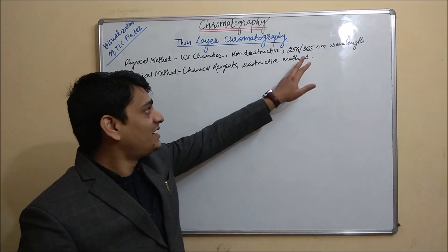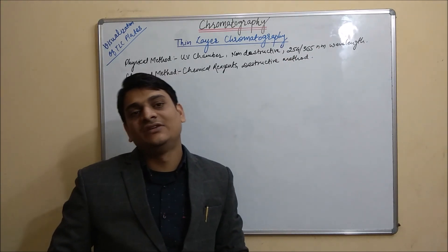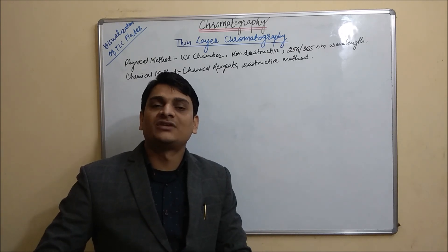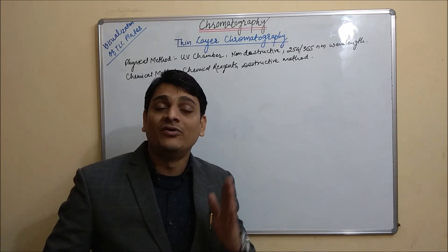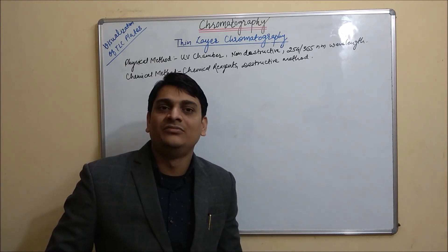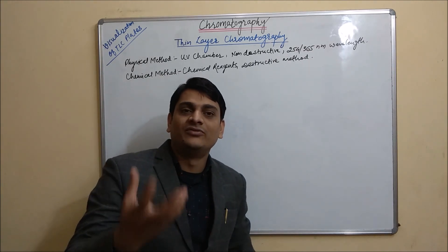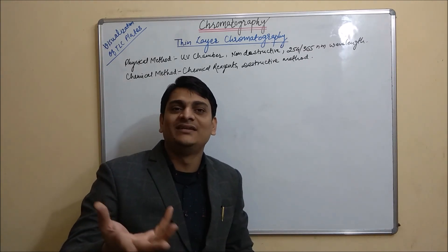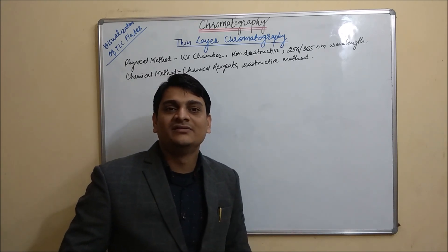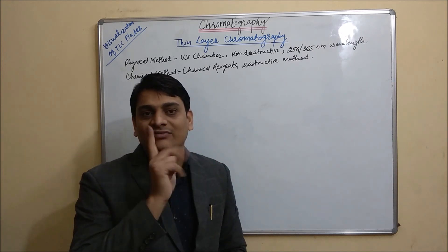The second wavelength is 365nm. Why we are using 365nm? Most of the fluorescent compounds give their fluorescence at 365nm because fluorescent compounds get activated and release their fluorescence at 365nm. That is why we are using two wavelengths — one is 254nm and second one is 365nm.